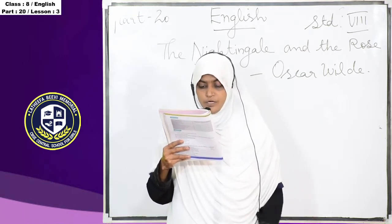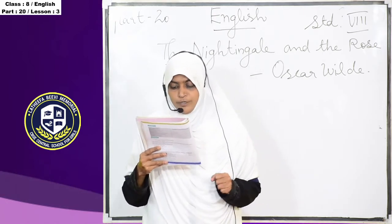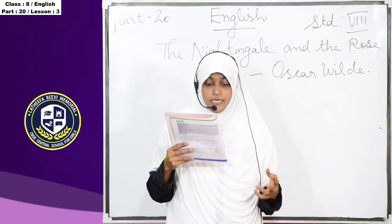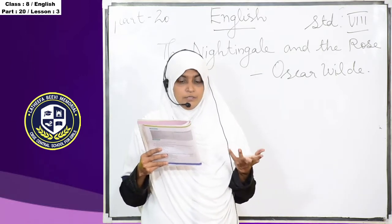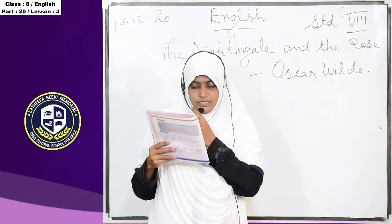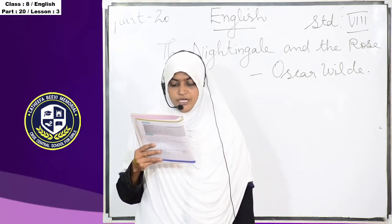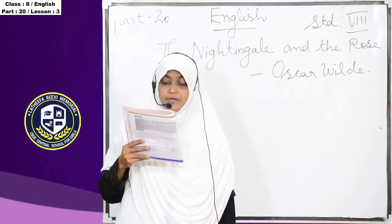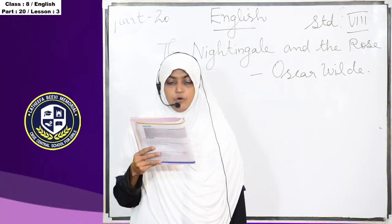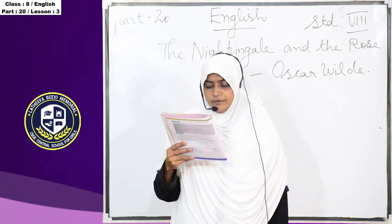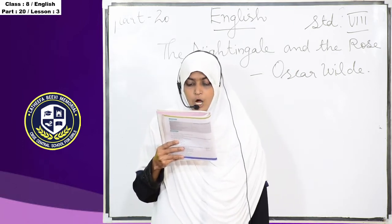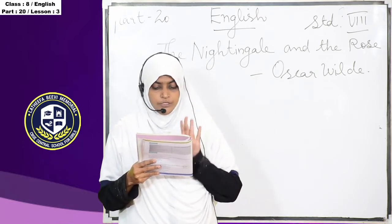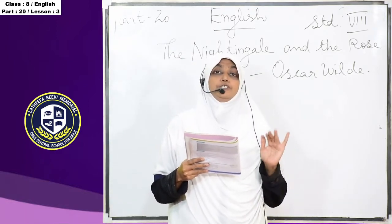His works include A Woman of No Importance, An Ideal Husband, and The Importance of Being Earnest. His famous novel is The Picture of Dorian Gray. In 1888 he wrote poems and published The Happy Prince and Other Tales, a collection of children's stories. Later he published a collection of essays arguing the tenets of aestheticism. Now we are going into the story.